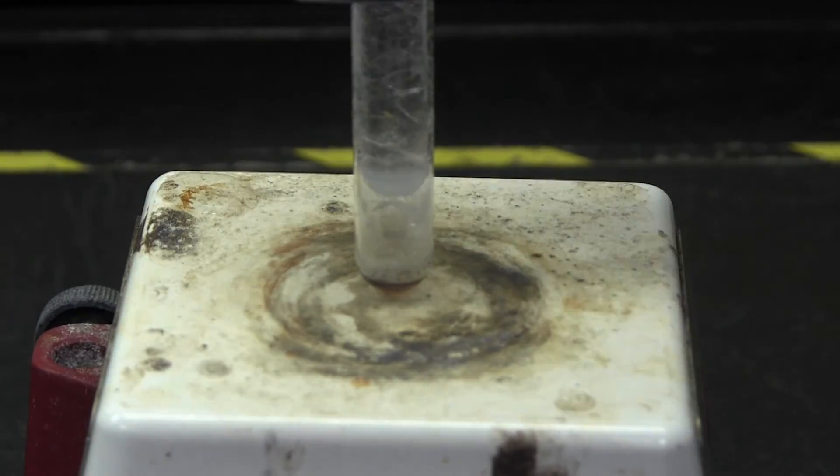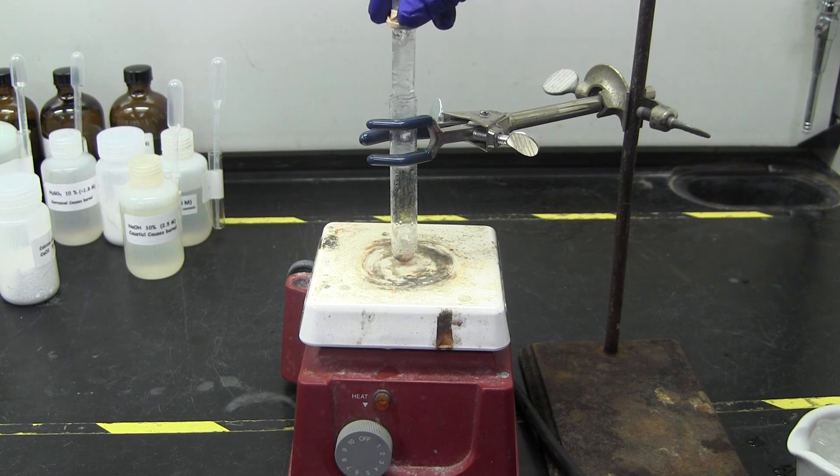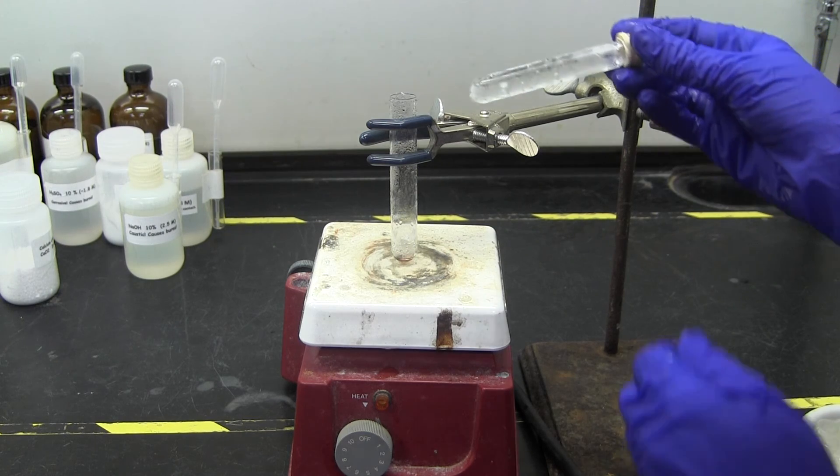Once this appears to stop thickening, the reaction is complete and should be taken off of the heat. Then, carefully remove the small test tube and scrape the film into a weighed vial.